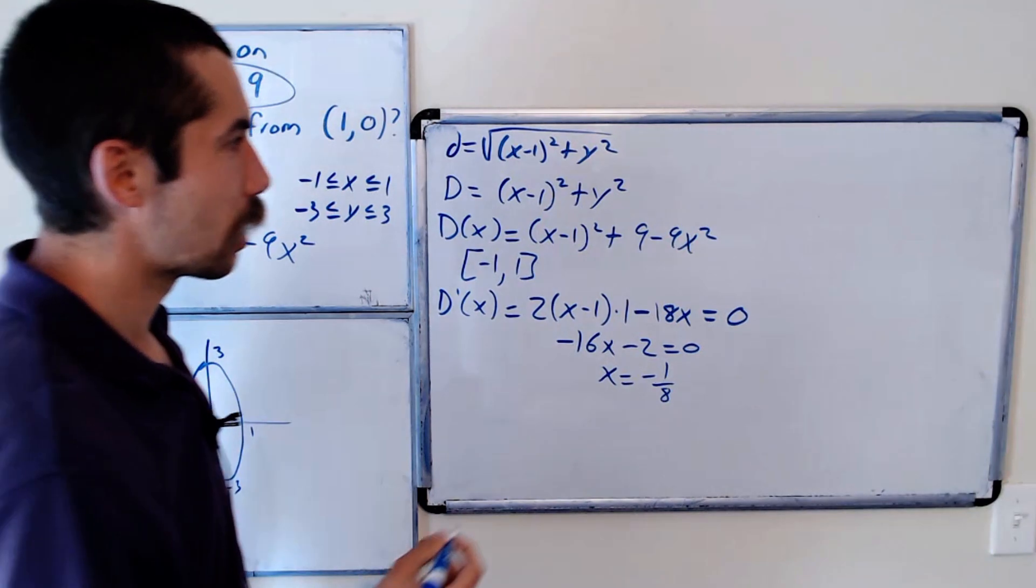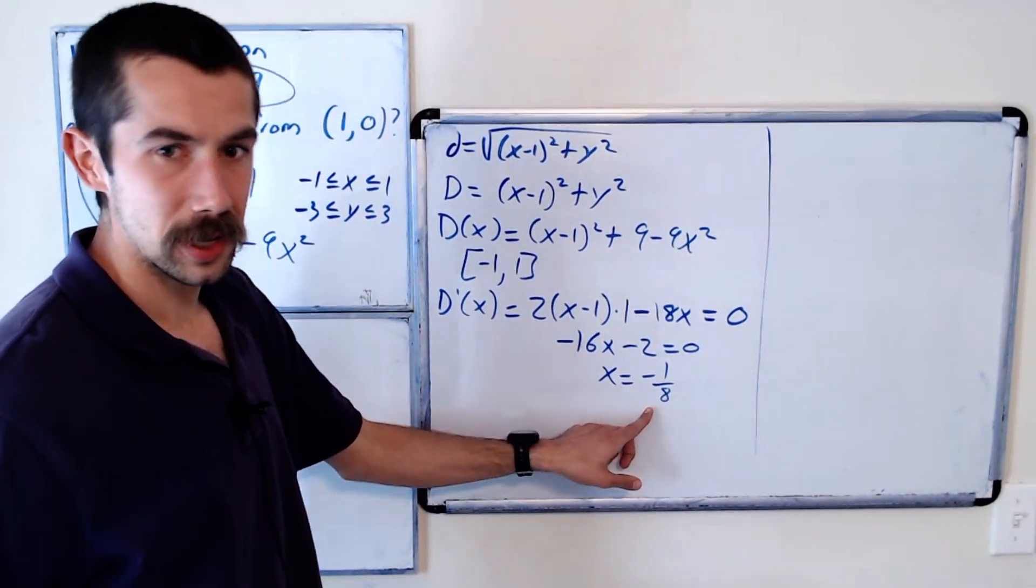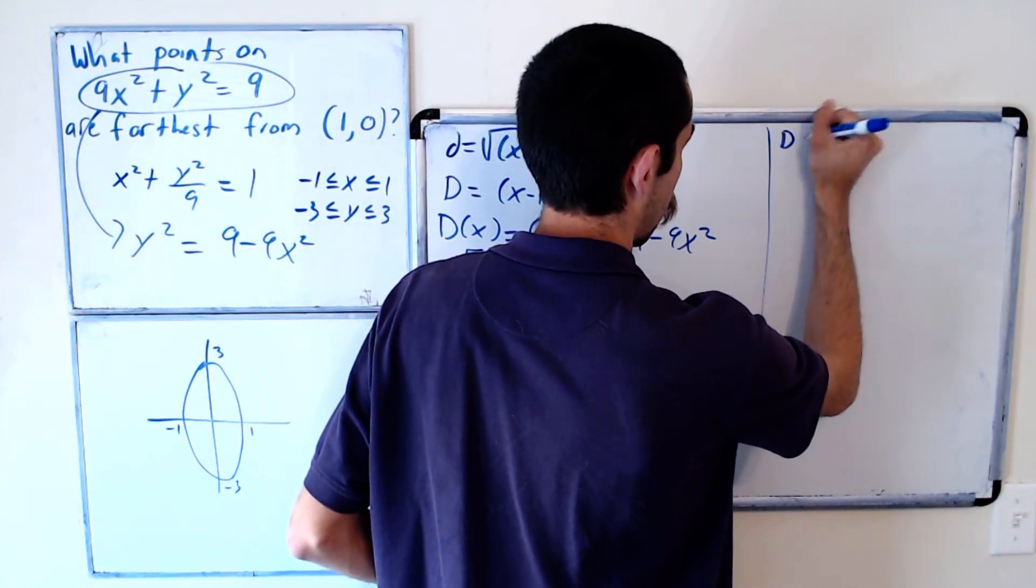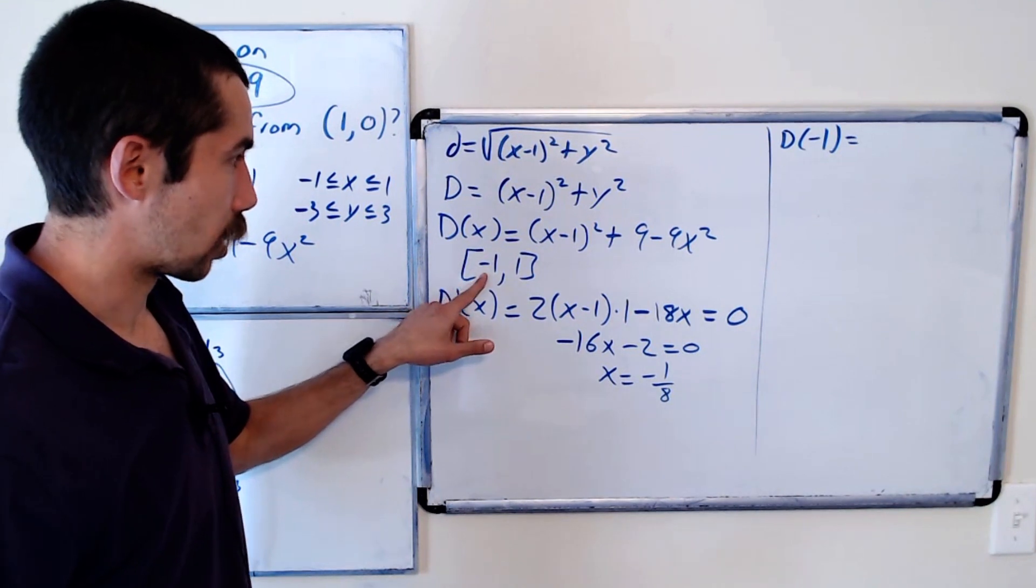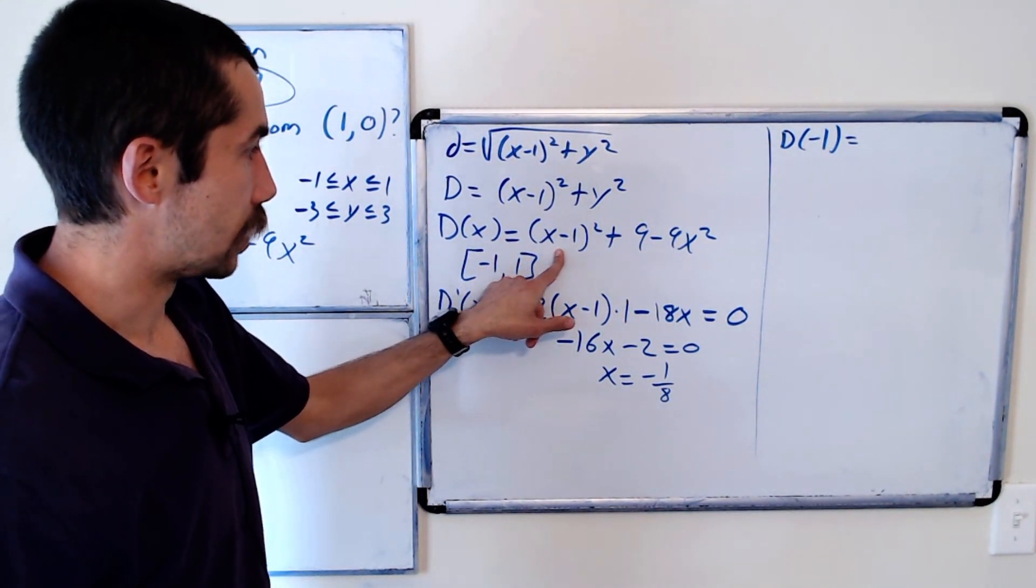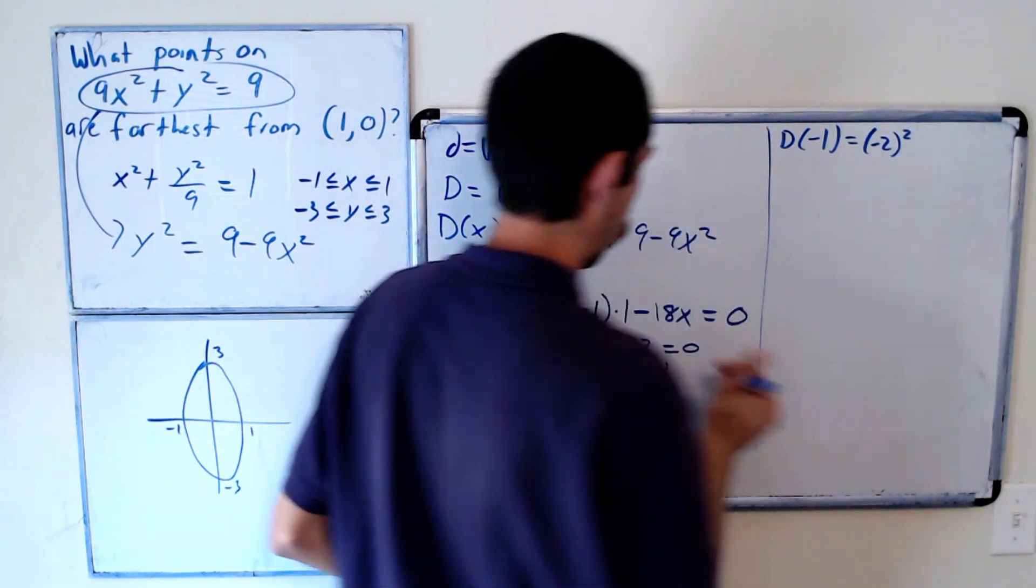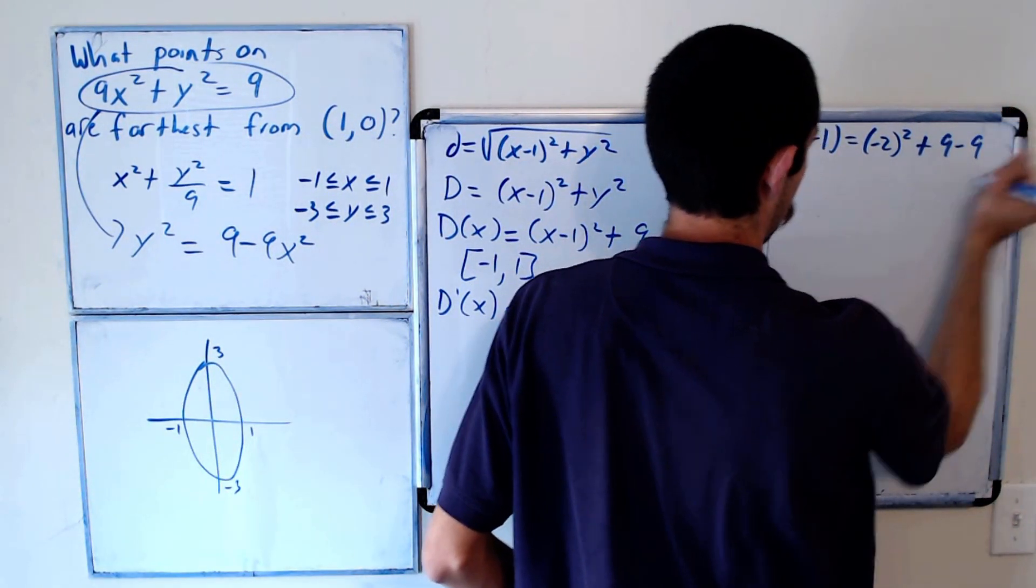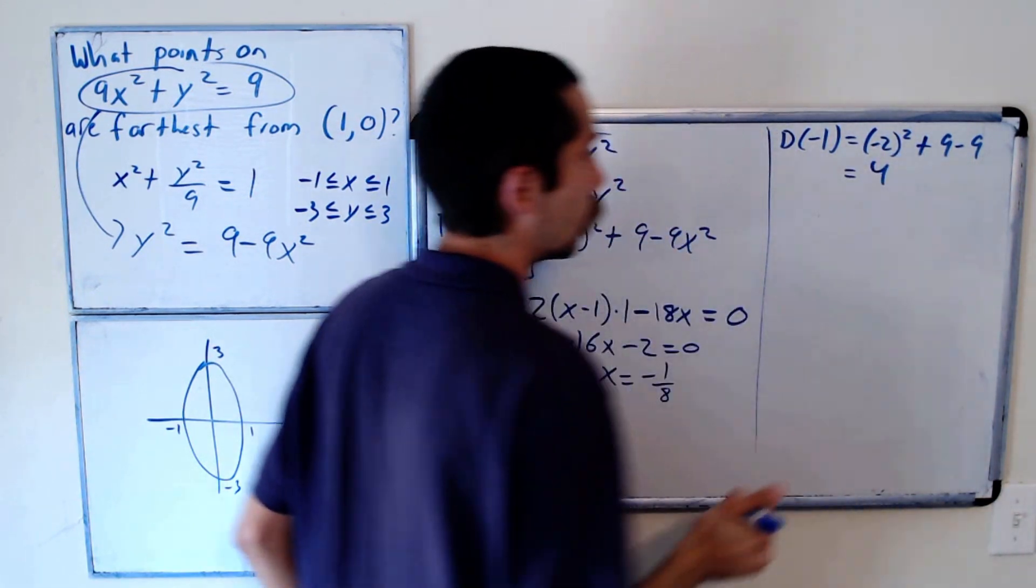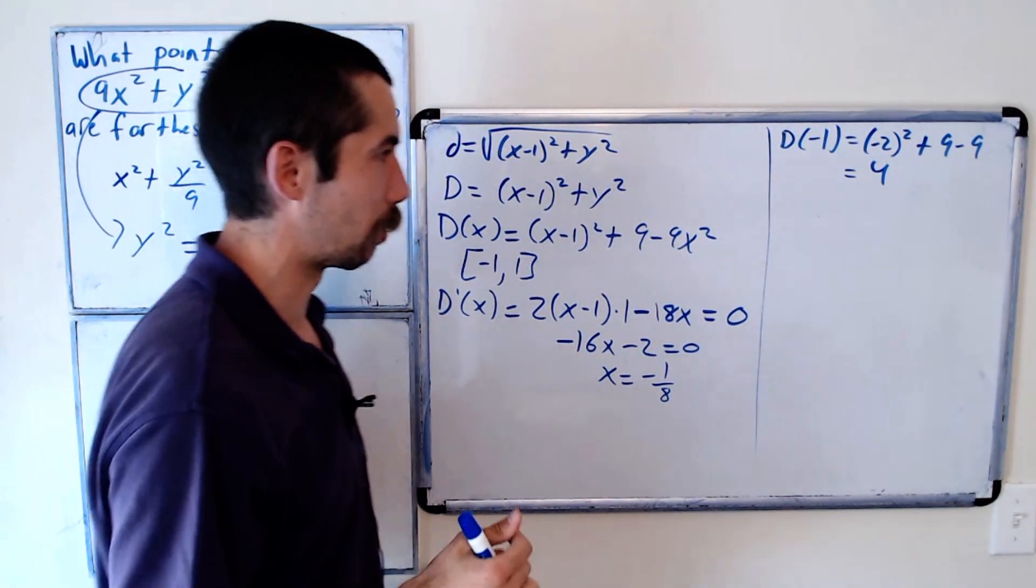We want to evaluate our function at the critical numbers and the endpoints. D of negative 1, that's our left endpoint, is negative 2 squared plus 9 minus 9, which equals 4. So the point when x equals negative 1 is 4 away from the point (1, 0).